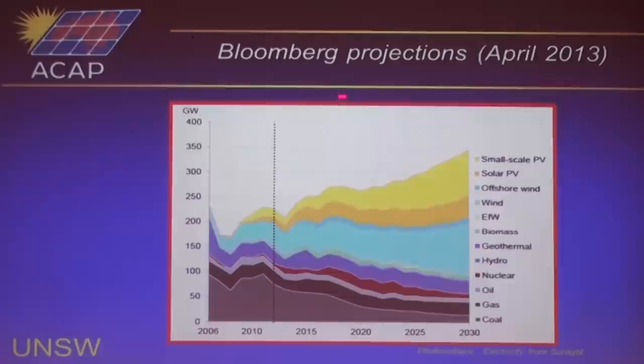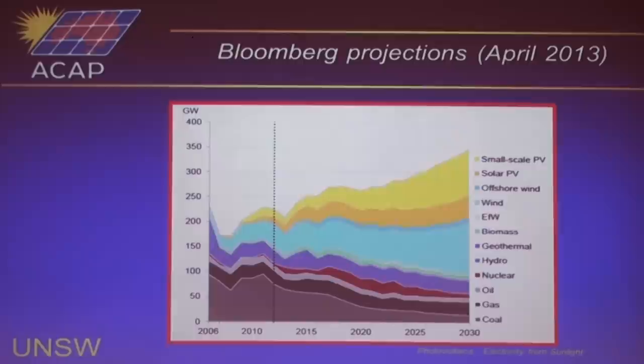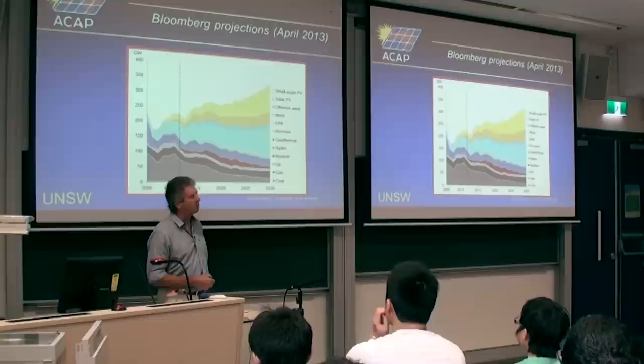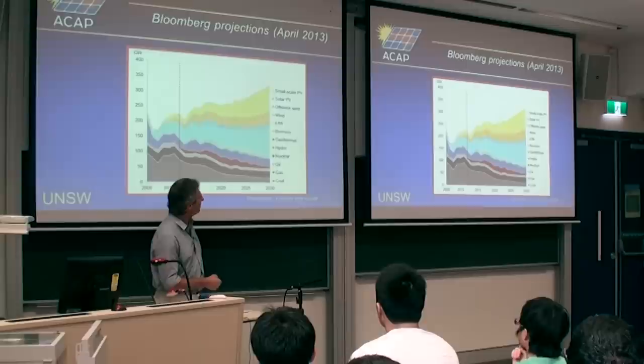Bloomberg last year published a chart carrying on my projections into the future, looking at gigawatts of new capacity installed over the coming decade or two. Photovoltaics — the two yellow bits — and coal are shown. Last year coal was still well ahead of photovoltaics, but over the next 10 or 20 years, market observers like Bloomberg are expecting photovoltaics to overtake fossil fuels as a major source of new electricity generation. So studying photovoltaics might not be too bad an idea — it's going to be a big industry.